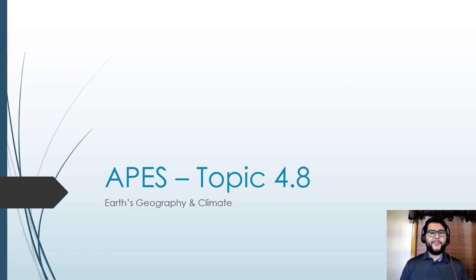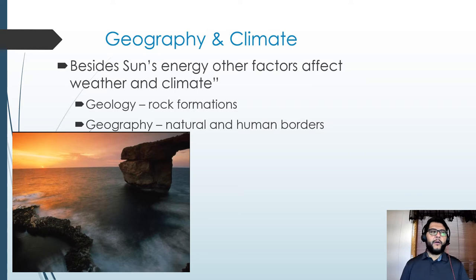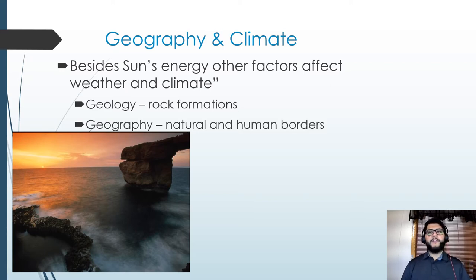Hey guys, this is Mr. V and this is APES review video topic 4.8: Earth's Geography and Climate. Geography covers natural and human borders, but geology also plays a big role in climate — whether rock formations allow wind to pass through, how much sunlight reaches an area, and so on. An important distinction: weather is short-term, while climate refers to precipitation, sunlight, and temperature patterns over a long period of time.